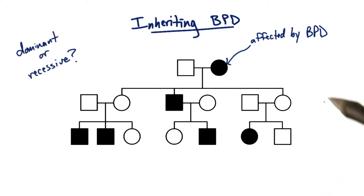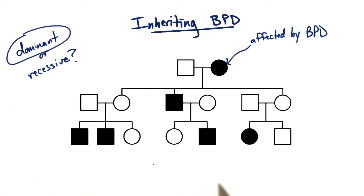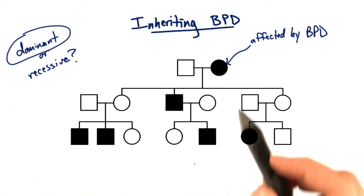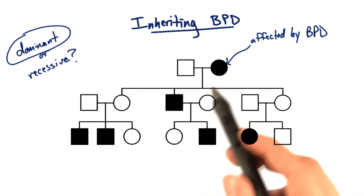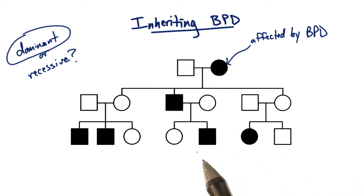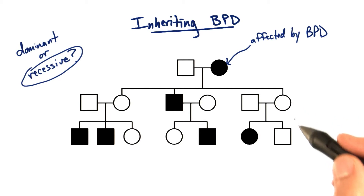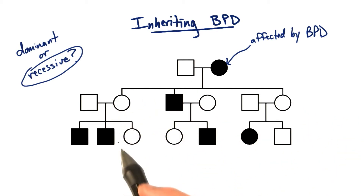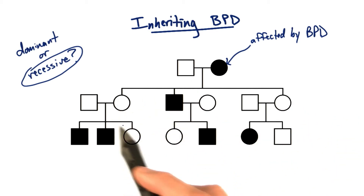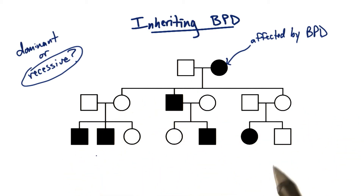For example, if I told you to look at this pedigree and tell me if you thought the inheritance pattern was dominant or recessive, you might be inclined to say dominant — if you look at the fact that the trait doesn't skip generations and affected parents do give rise to affected children. But you might also think that it's recessive. For example, over here the trait skipped generations, and it did over here as well. And we have unaffected parents with affected children — that's typical of a recessive trait.